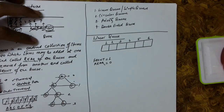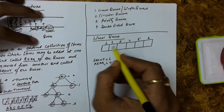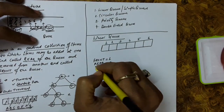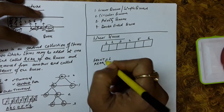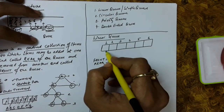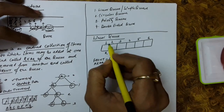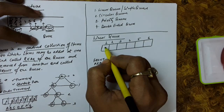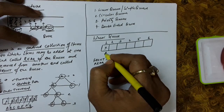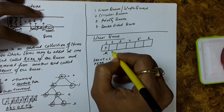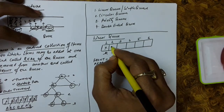For insertion of an element, rear is incremented by 1. So rear starts at 0, and for an item's insertion we increment rear to position 1. Let us insert an item — let us say x.